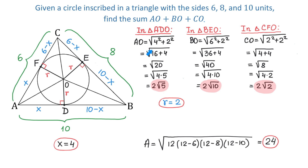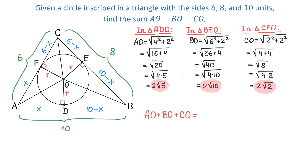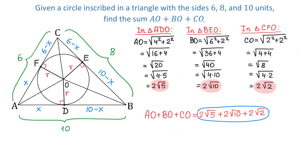So we found AO, BO, and CO. To find their sum, we add 2 root 5 plus 2 root 10 plus 2 root 2. If we want the exact sum, we keep this answer. For an approximate value using a calculator, the sum is approximately 13.6 units. And now the problem is completed.